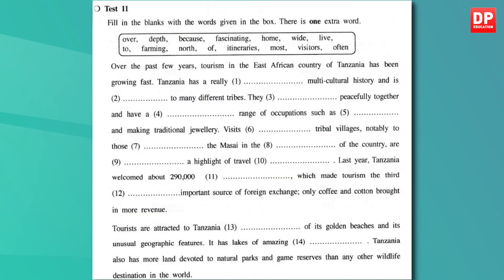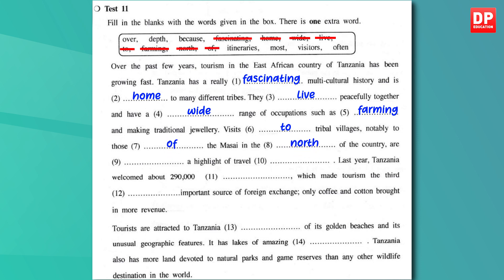Over the past few years, tourism in the East African country of Tanzania has been growing fast. Tanzania has a really fascinating multicultural history and is home to many different tribes. They live peacefully together and have a wide range of occupations such as farming and making traditional jewelry. Visits to tribal villages, notably to those of the Maasai in the north of the country, are often a highlight of travel itineraries. Last year Tanzania welcomed about 290,000 visitors, making tourism the third most important source of foreign exchange — only coffee and cotton brought in more revenue. Tourists are attracted to Tanzania because of its golden beaches and unusual geographic features, including lakes of amazing depth, and more land devoted to natural parks and game reserves than any other wildlife destination in the world.